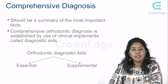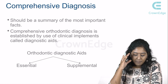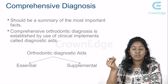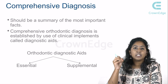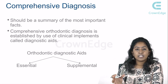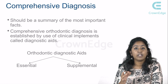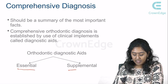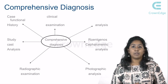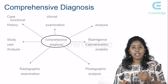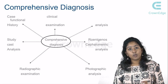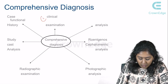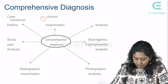A comprehensive diagnosis should be a summary of the most important facts. The comprehensive orthodontic diagnosis is established using clinical implements called diagnostic aids. After examining and talking to the patient and performing intraoral examination, you perform certain tests or investigations to arrive at a diagnosis. These are divided into essential diagnostic aids and supplemental diagnostic aids — supplemental aids are used when you want to further diagnose and know the adjuncts of the etiology.